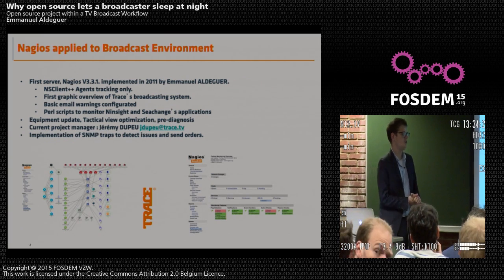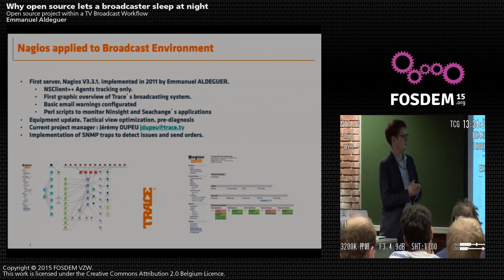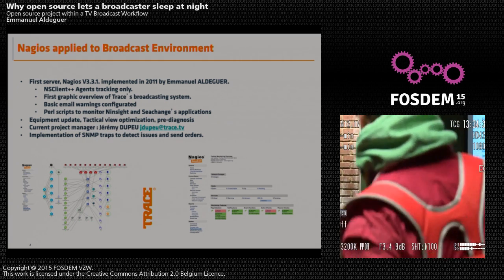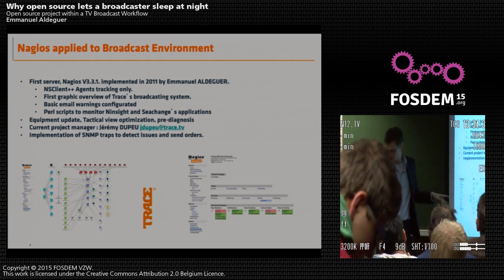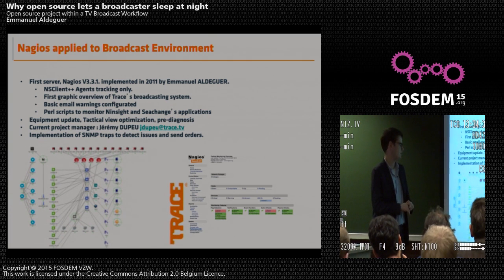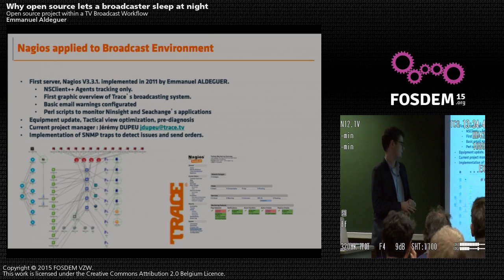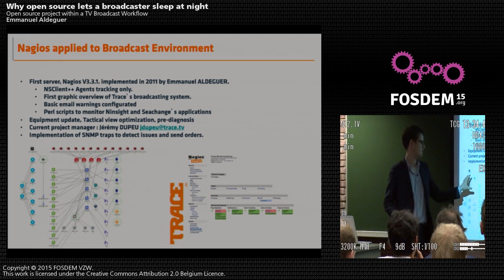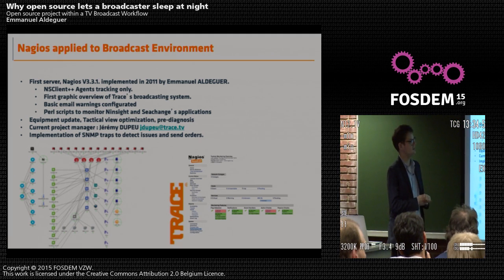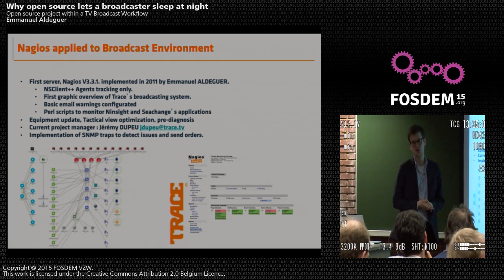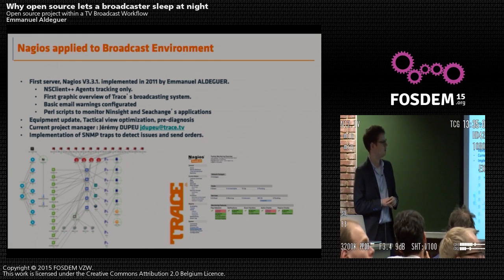The first implementation of an open source project is Nagios. If I remember correctly, it is the very first project we implemented. This is really the key for us to sleep. As you can see on this graphic, you have all the different servers and equipment — the playout servers, automation servers, graphic servers, encoders, and muxing equipment — all in the Nagios interface. When I first implemented version 3.3.1, it was very much about this graphic view: if it was red, something went wrong and any of our technicians could easily understand what the problem was.